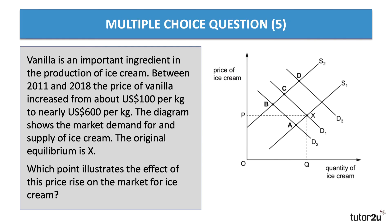Question five: vanilla is an important ingredient in the production of ice cream, and between 2011 and 2018 the world price of vanilla increased substantially — by 500 percent. The diagram shows the market demand for and supply of ice cream; originally the equilibrium is at point X. Which point illustrates the impact of this price rise in vanilla on the market for ice cream — is it A, B, C, or D? Have a go at question five.